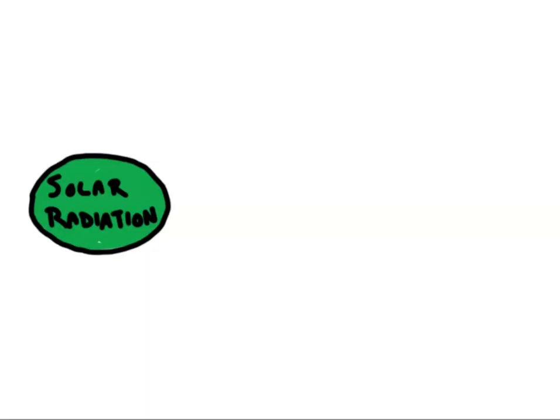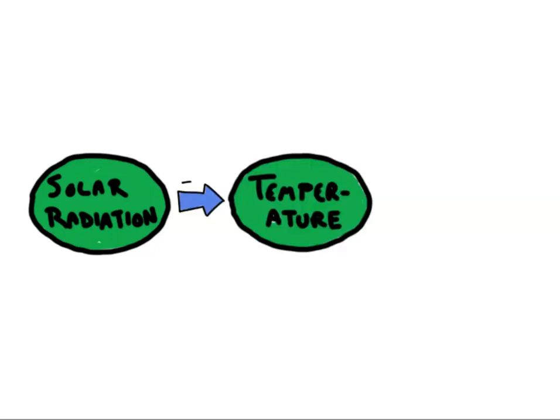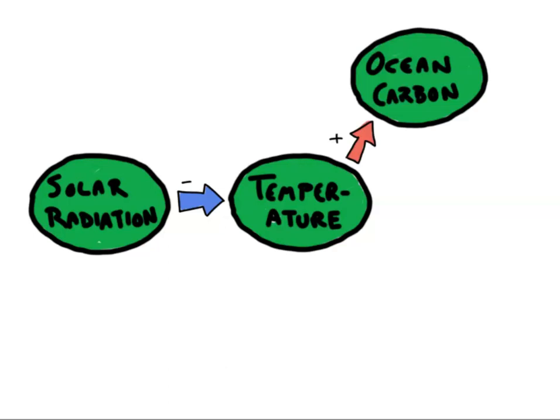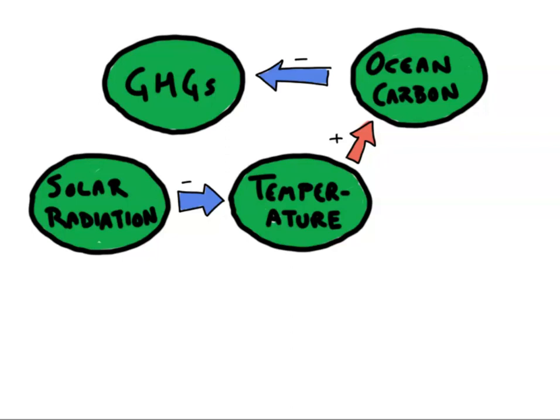At the start of a glacial cycle, we get a drop in solar radiation. This cools the Earth a bit. Under cooler conditions, the oceans absorb more CO2 from the atmosphere. The reduced atmospheric CO2 decreases the greenhouse effect, causing even more cooling. The overall result is a positive feedback loop, enhancing the cooling effect.